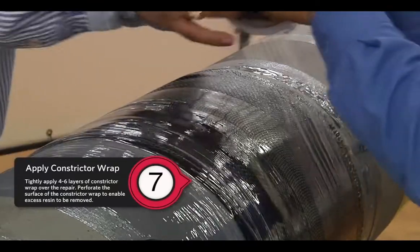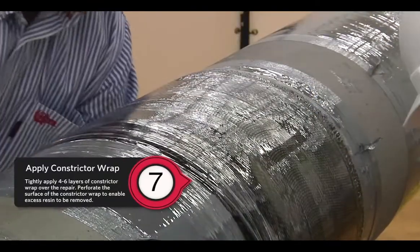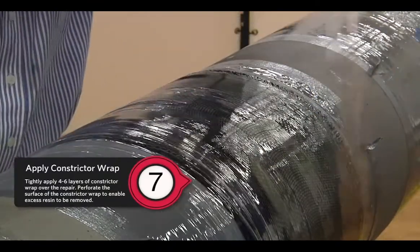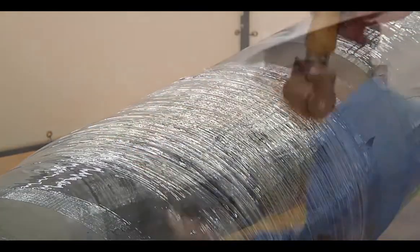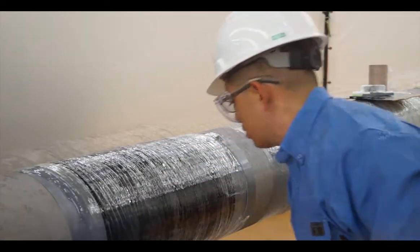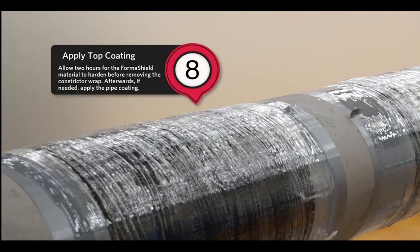Apply constrictor wrap. Tightly apply 4 to 6 layers of constrictor wrap over the repair. Lightly perforate the surface of the constrictor wrap to enable excess resin to be removed. Allow 2 hours for the Atlas wrap material to harden before removing the constrictor wrap.